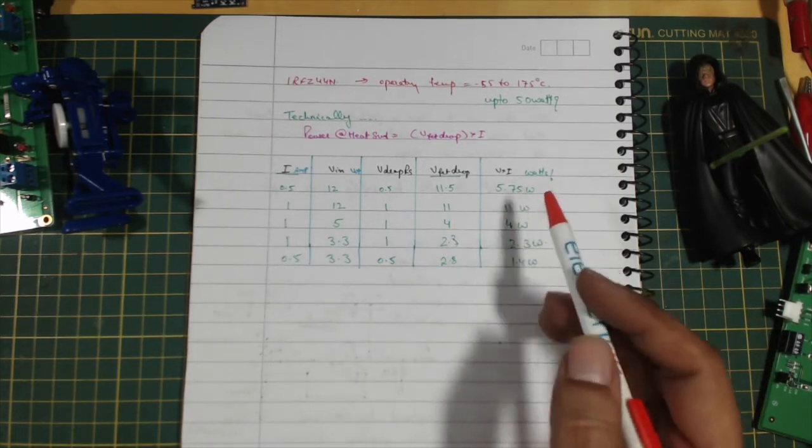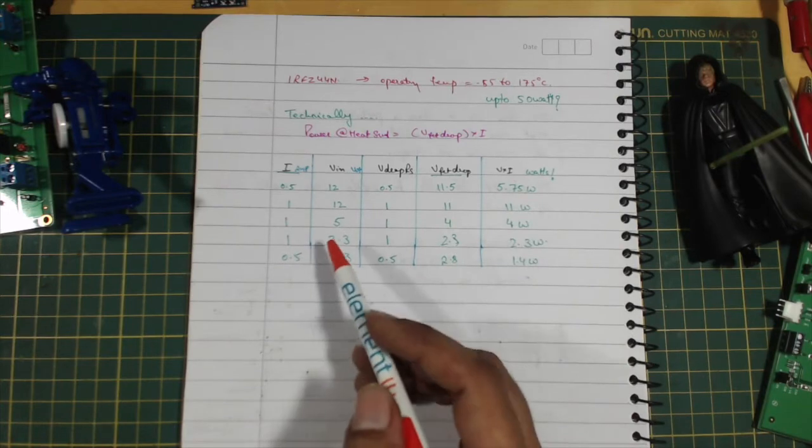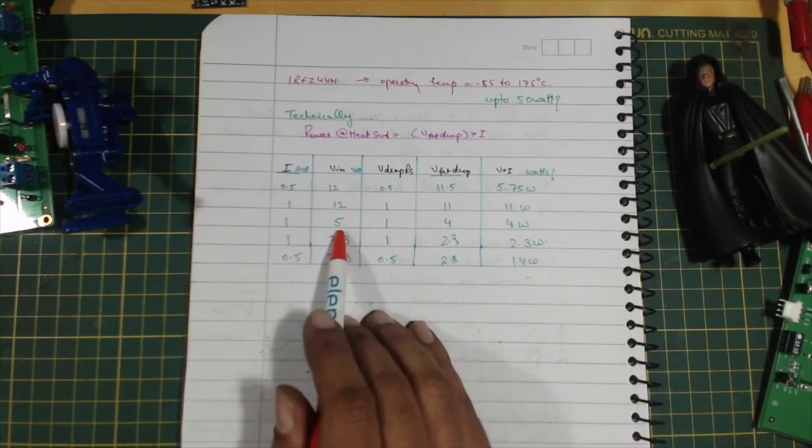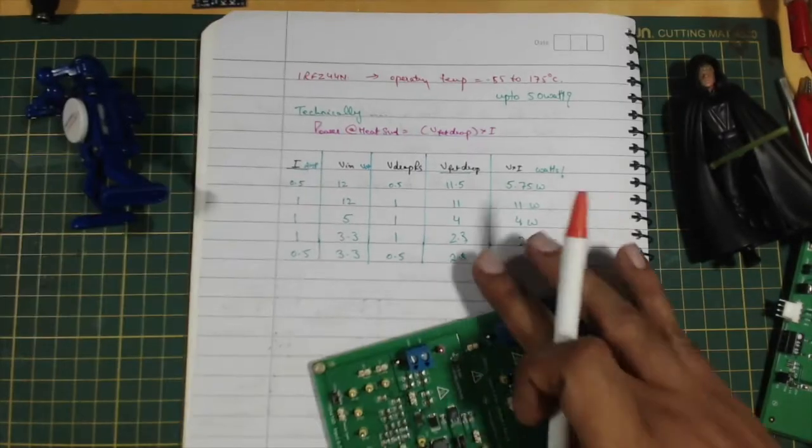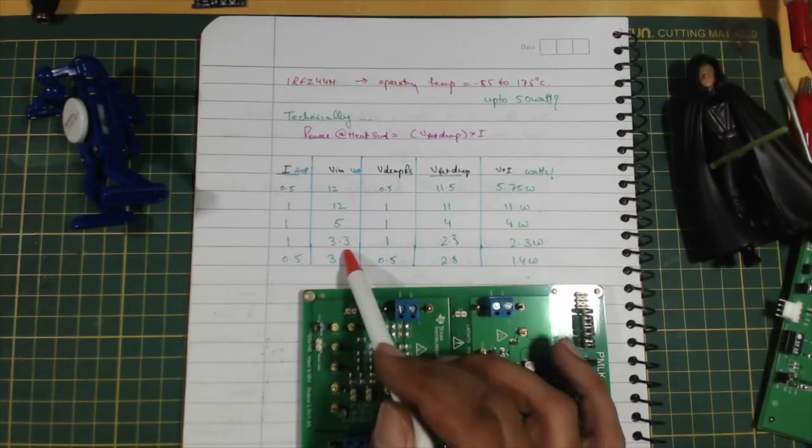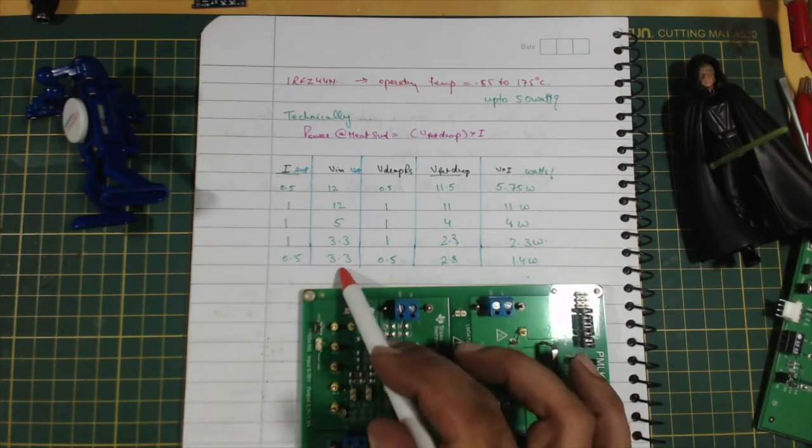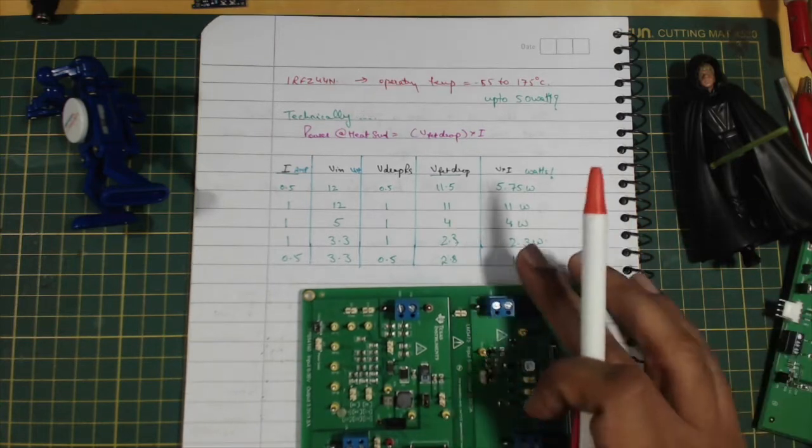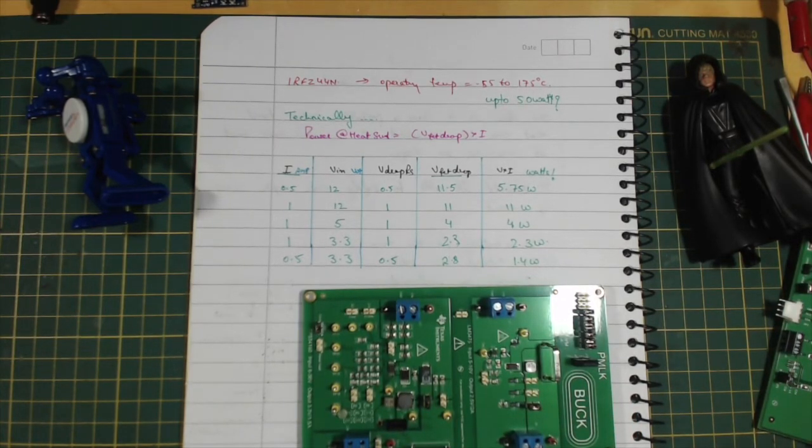If I bump up the current draw to about one amp at 12 volts, it comes out to 11 watts. About one amp lowering the voltage down to five volts, it comes to four watts. One amp drawn at 3.3 volts - so this thing is capable of doing 3.3 volts at 1.5 amps. I can test this at one amp 3.3 and it'll only dissipate two to five watts. And doing half an amp at 3.3, it would be 1.4 watts. So really this tiny little load is going to solve a lot of my problems. So let's take a look at the working of it. Let's do a small demonstration of the project in action.